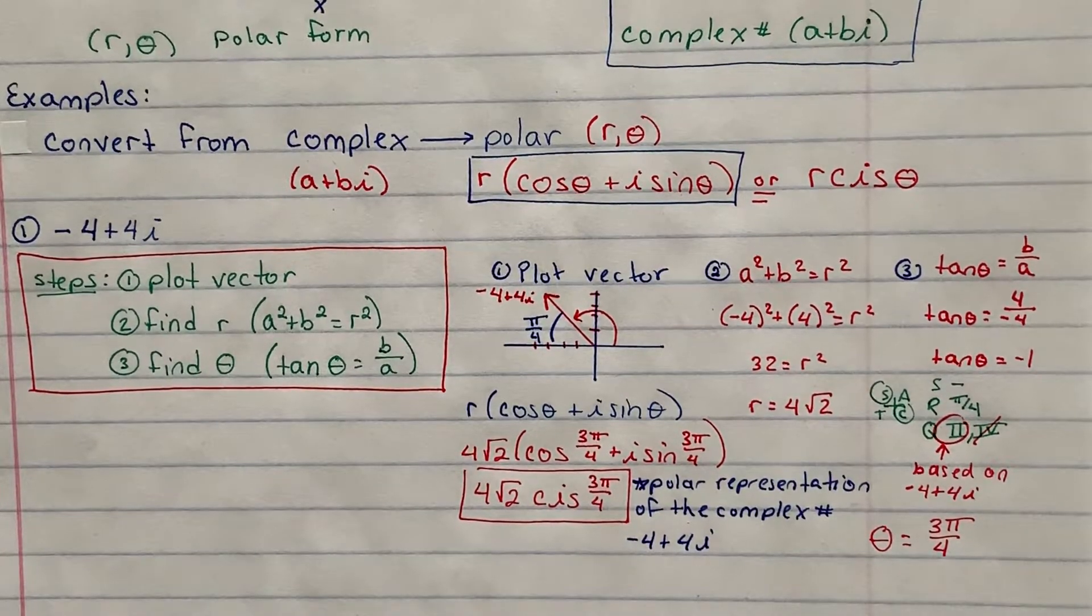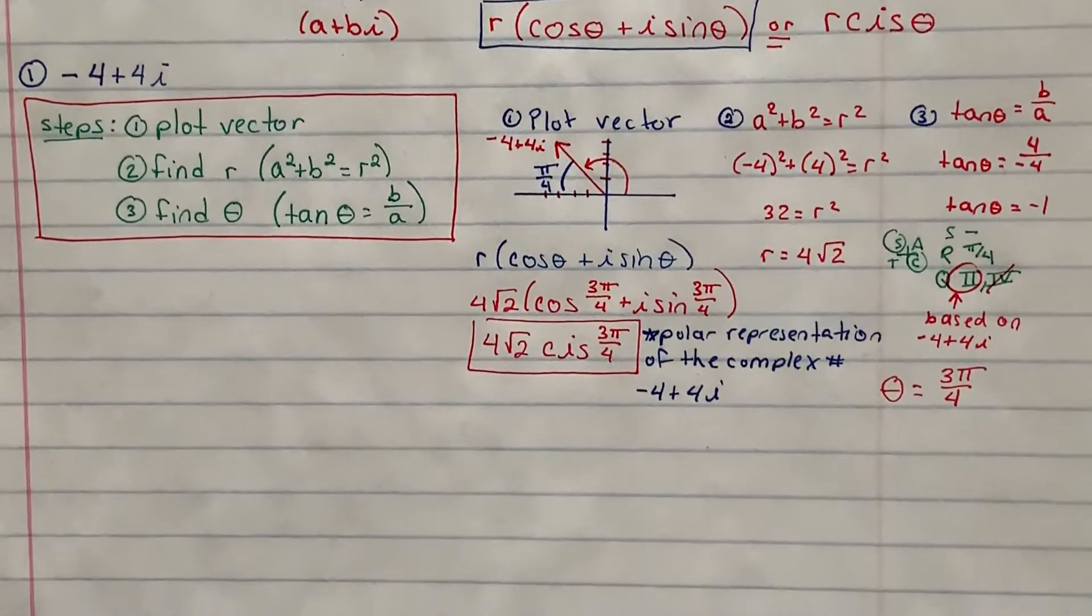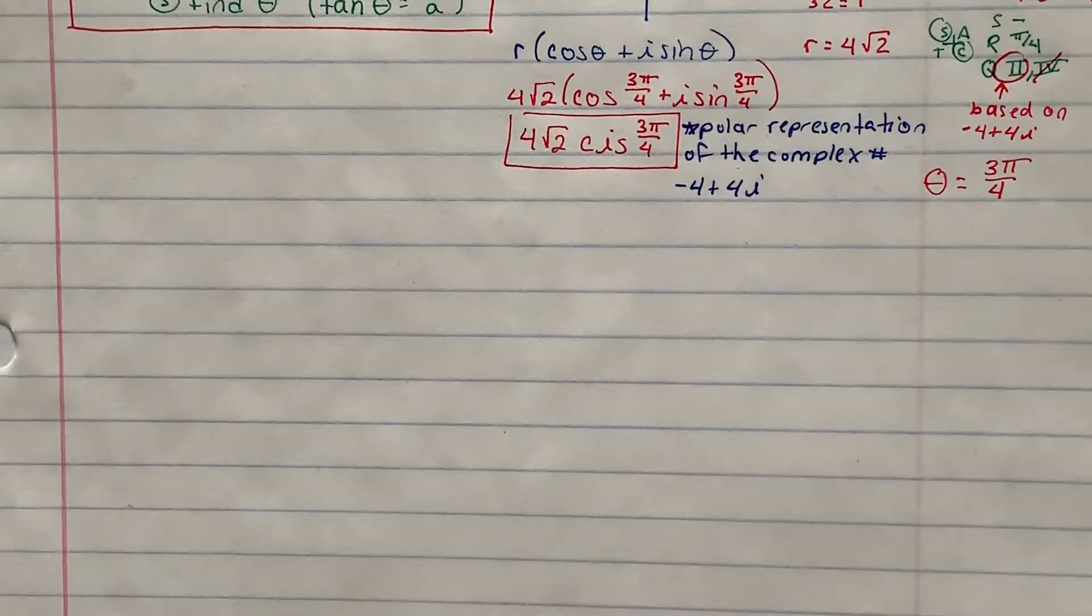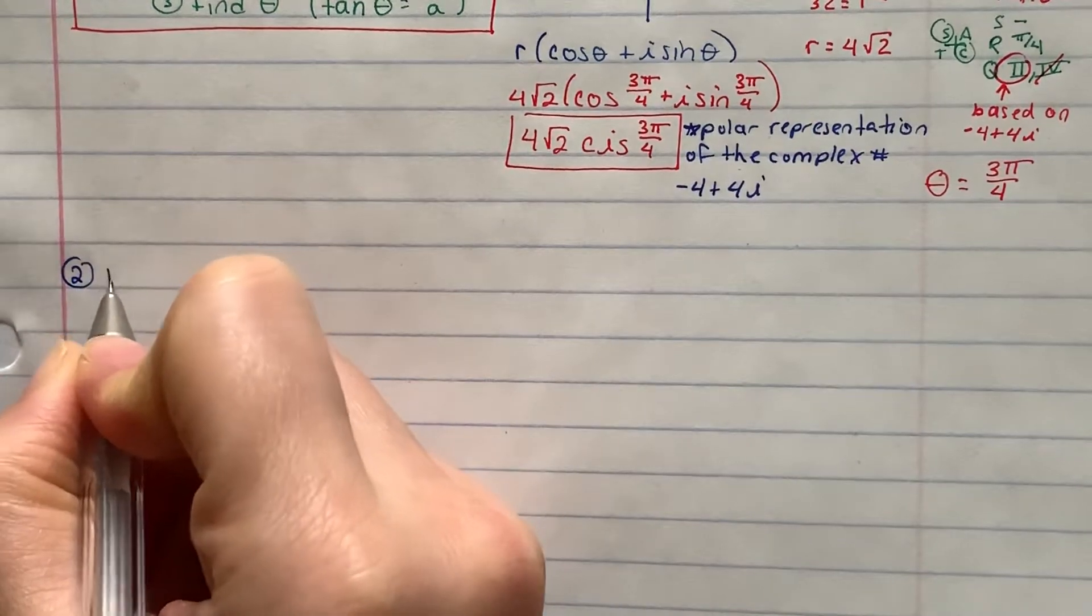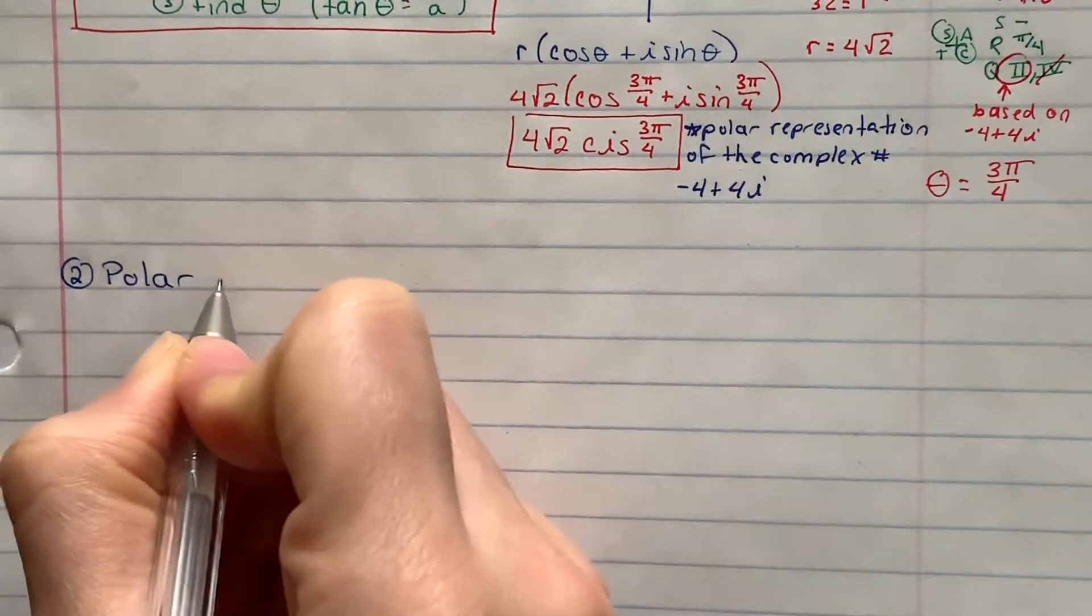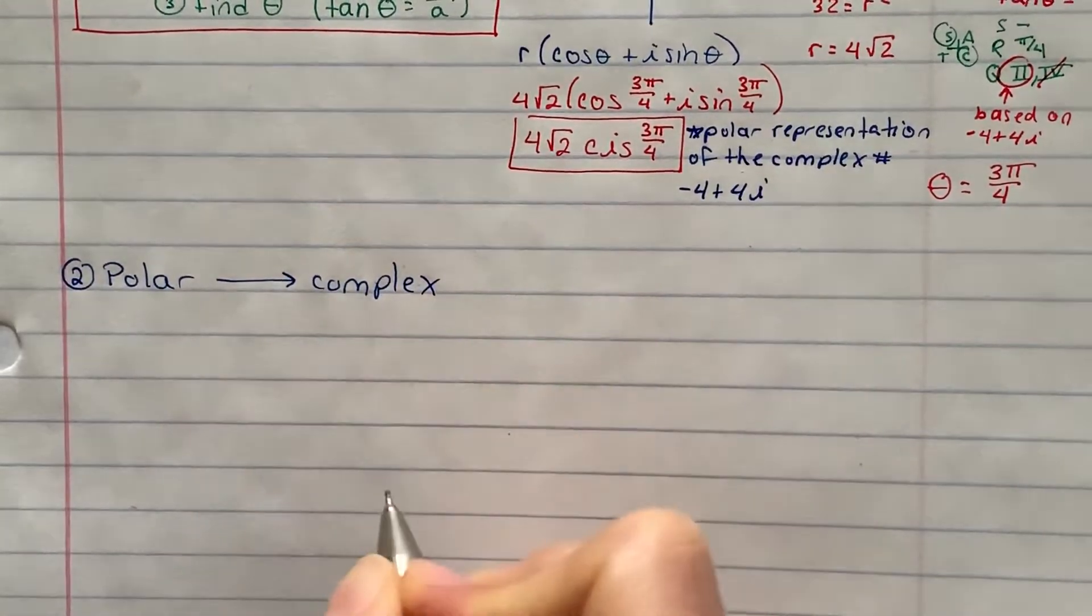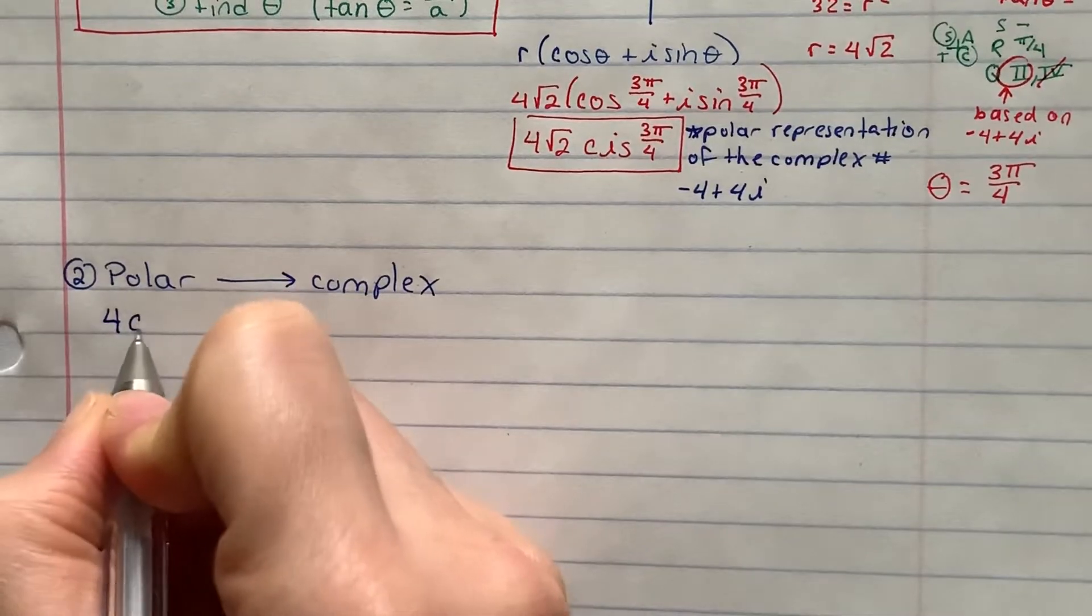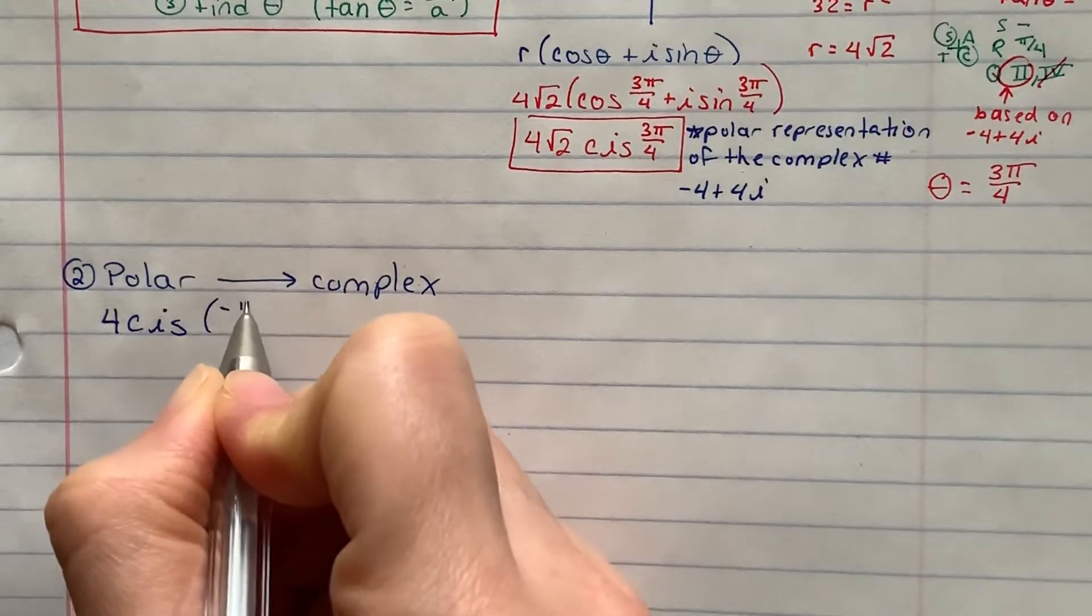Okay, so again, that was a lot of material right there. If you need to pause and rewind, maybe try the question again on your own, please do so. But I'm going to go on to question number 2. I only have two questions today. So number 2 is going in the opposite way. I'm going to go from polar to complex.